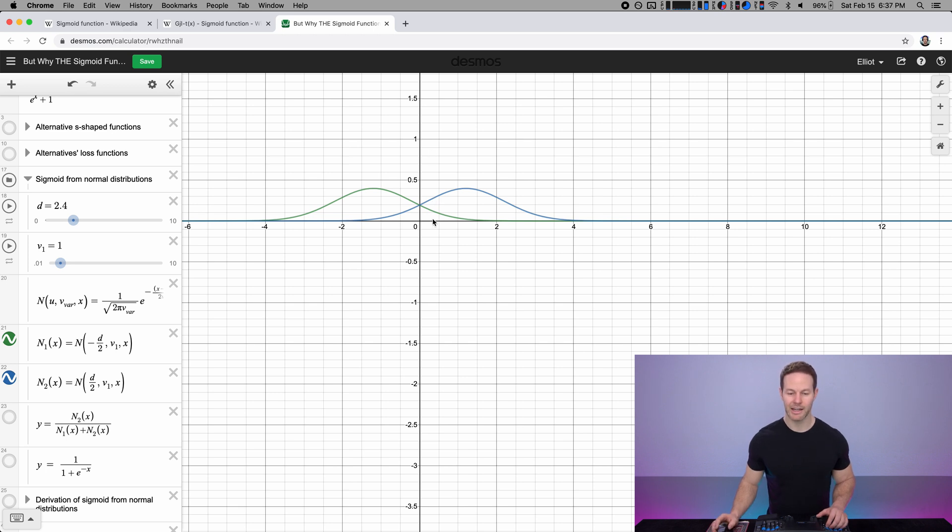So if a drop falls right here, it'll have a two thirds chance of having come from the right branch and a one third chance of having come from the left branch. And if we do that all along this number line, taking the height of the blue line, and dividing it by the height of the sum of the two probabilities at that point, we get, lo and behold, the sigmoid function.